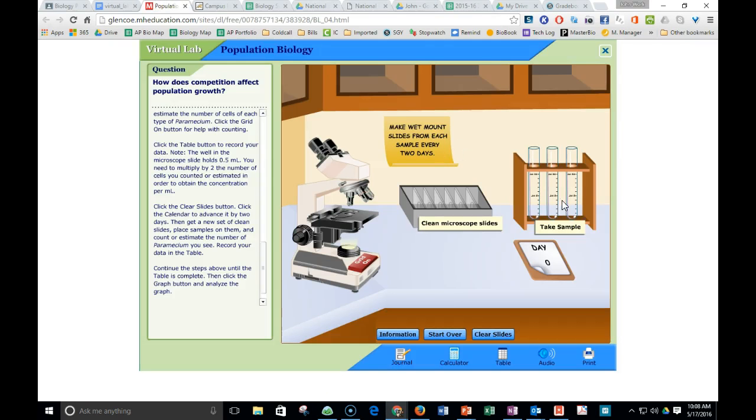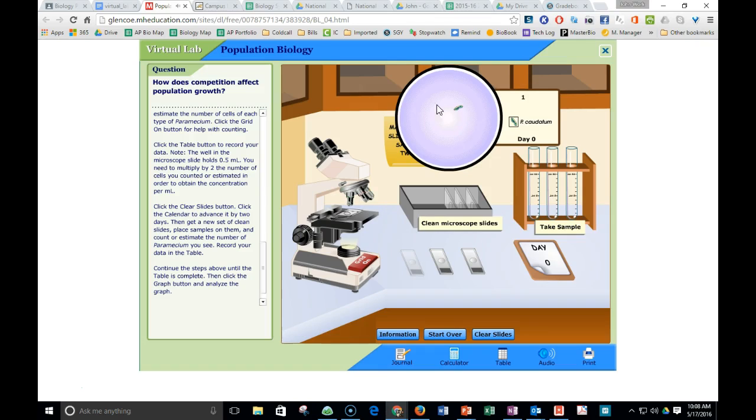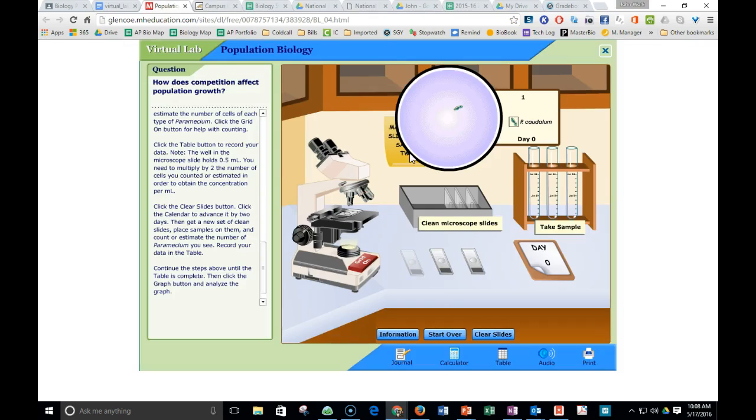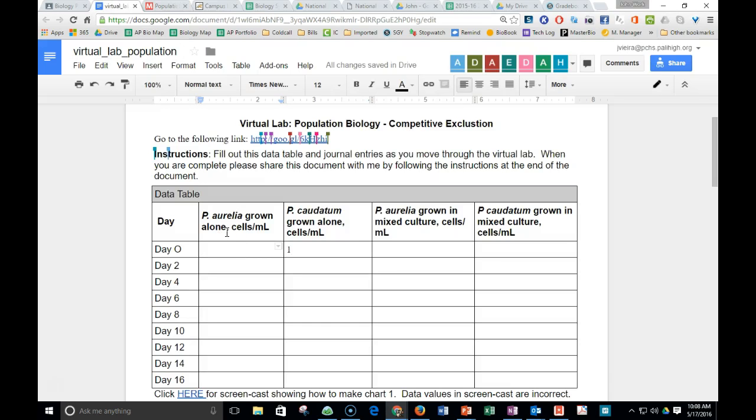And so you guys are going to come up here. You're going to click the microscope slides. And then you're going to click the sample. Click and drag this over here. And then you're going to be able to look and count how many of the paramecium caudatum there are. And you're going to put that right here in this data table where it says paramecium caudata grown alone. There's one. Then you guys are going to go back, grab the other one. That's the paramecium aurelia. There's one of them. You're going to put that where it's grown alone by itself.